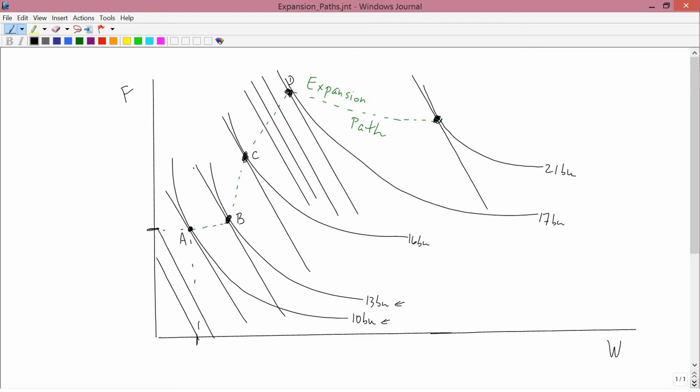When you go from point D to point E, the expansion path is downward sloping. Shifting from D to E shifts you from 17 bushels to 21 bushels, and the amount of water that you use goes up from D to E, but the amount of fertilizer doesn't. Here's the amount of fertilizer in D, here's the amount of fertilizer in E. The amount of fertilizer falls.